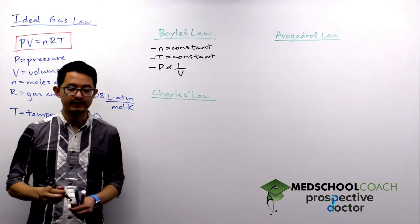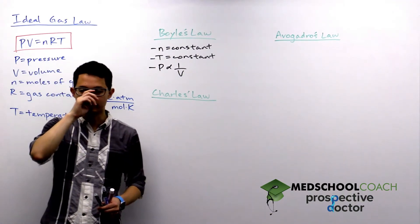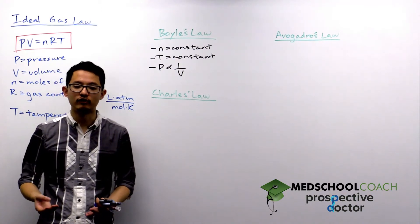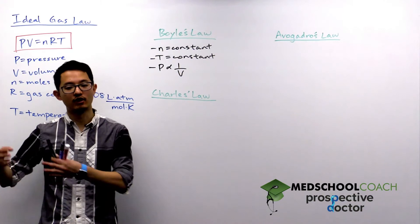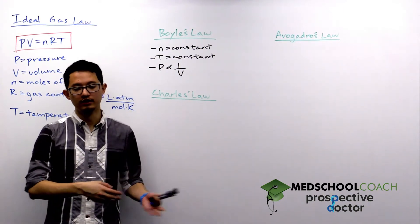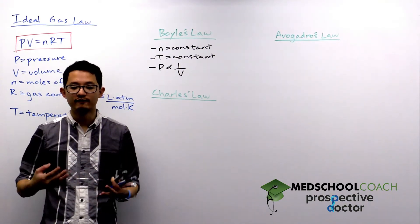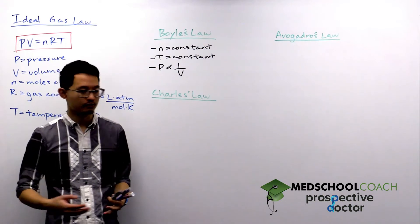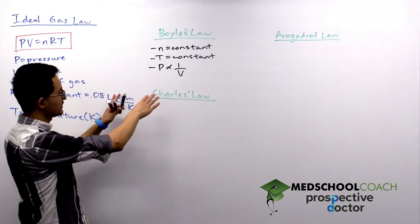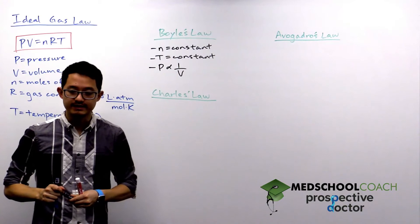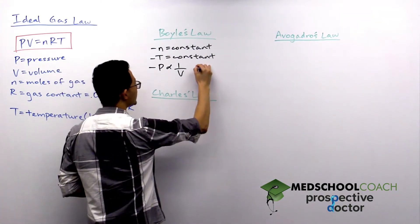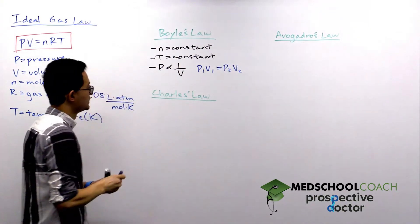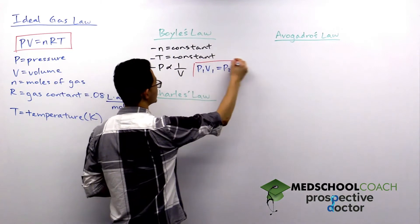Intuitively this makes sense: if you increase the volume of your container, gas molecules have to travel a larger distance to collide from one wall to another, so there are fewer collisions against the walls, giving you a lower pressure. We often express this as the equation P1V1 equals P2V2, which you'll want to be familiar with.